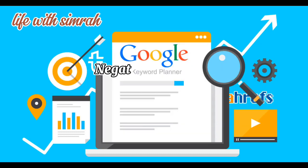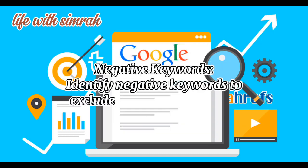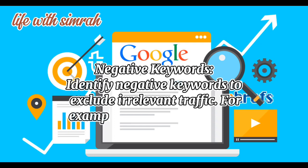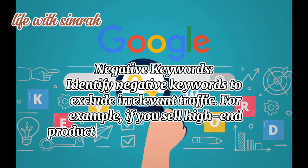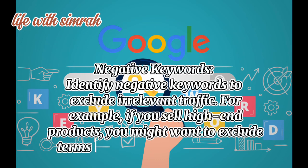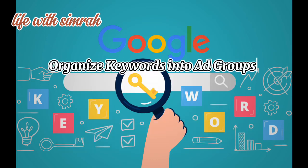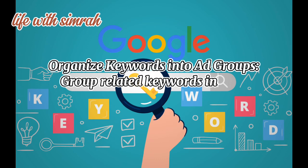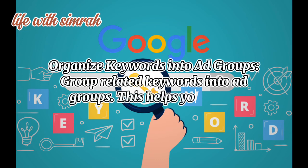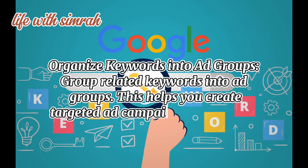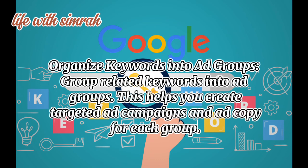Identify negative keywords to exclude irrelevant traffic. For example, if you sell high-end products, you might want to exclude terms like 'cheap' or 'discount.' Organize keywords into ad groups — group related keywords together. This helps you create targeted ad campaigns and ad copy for each group.